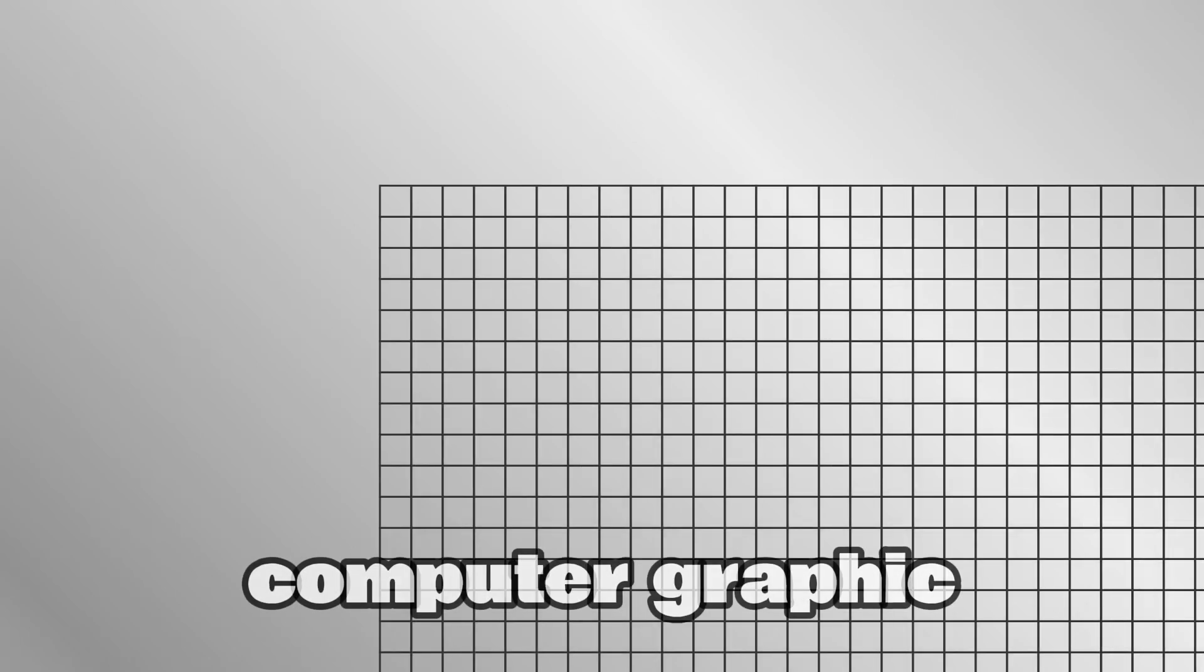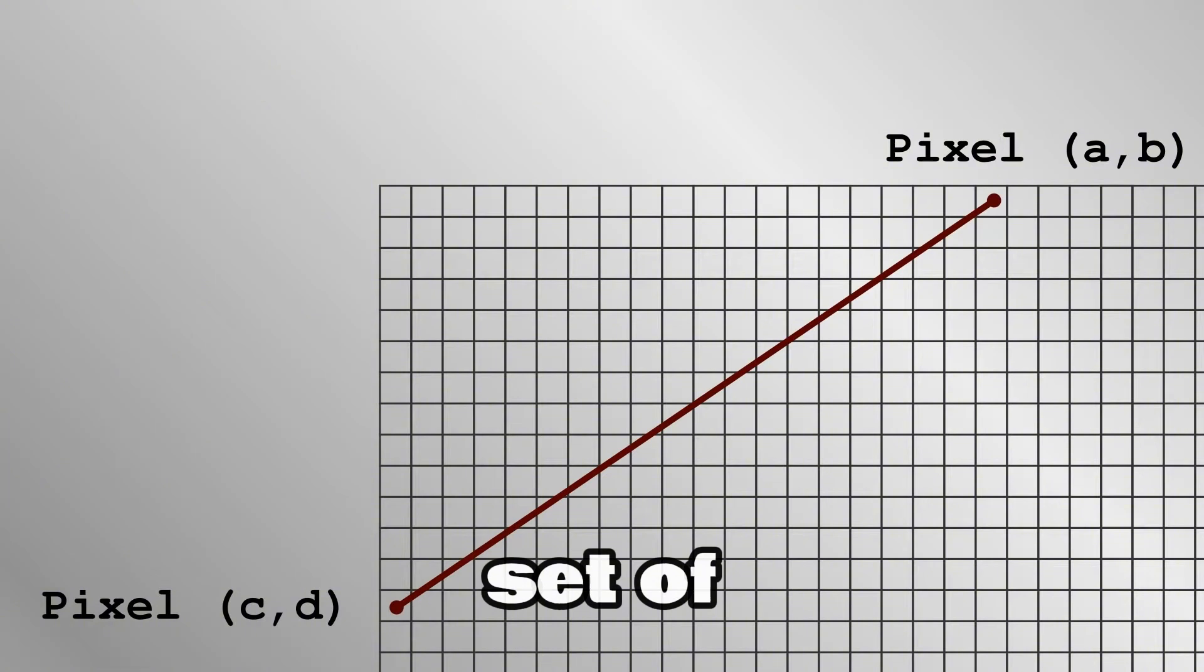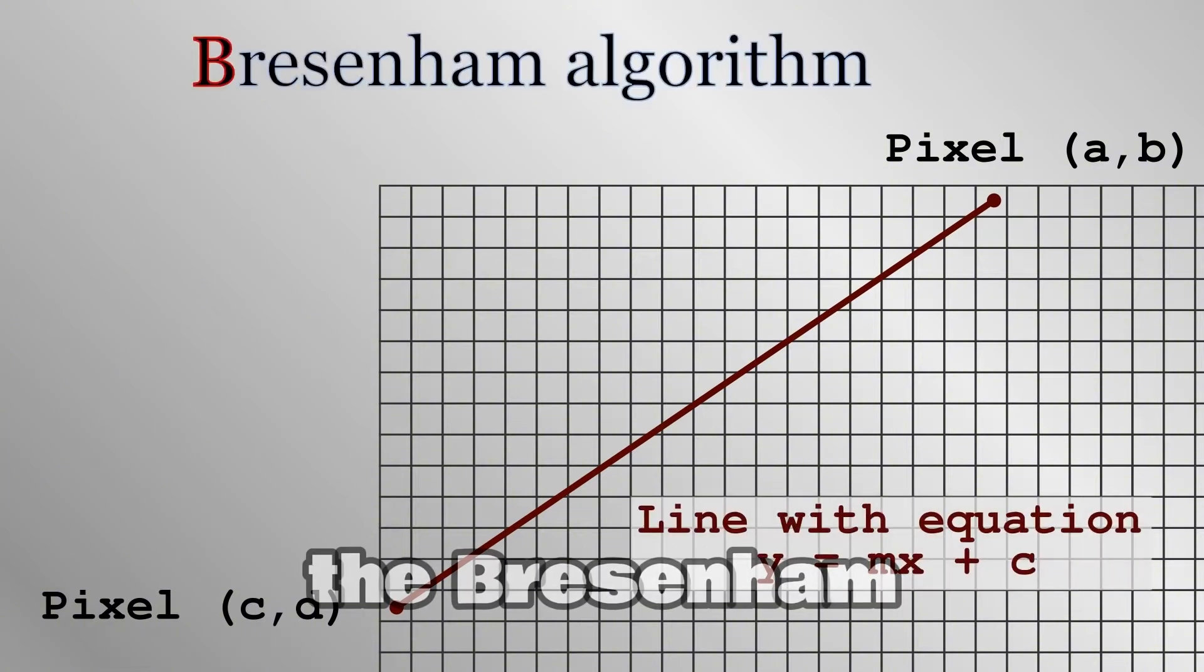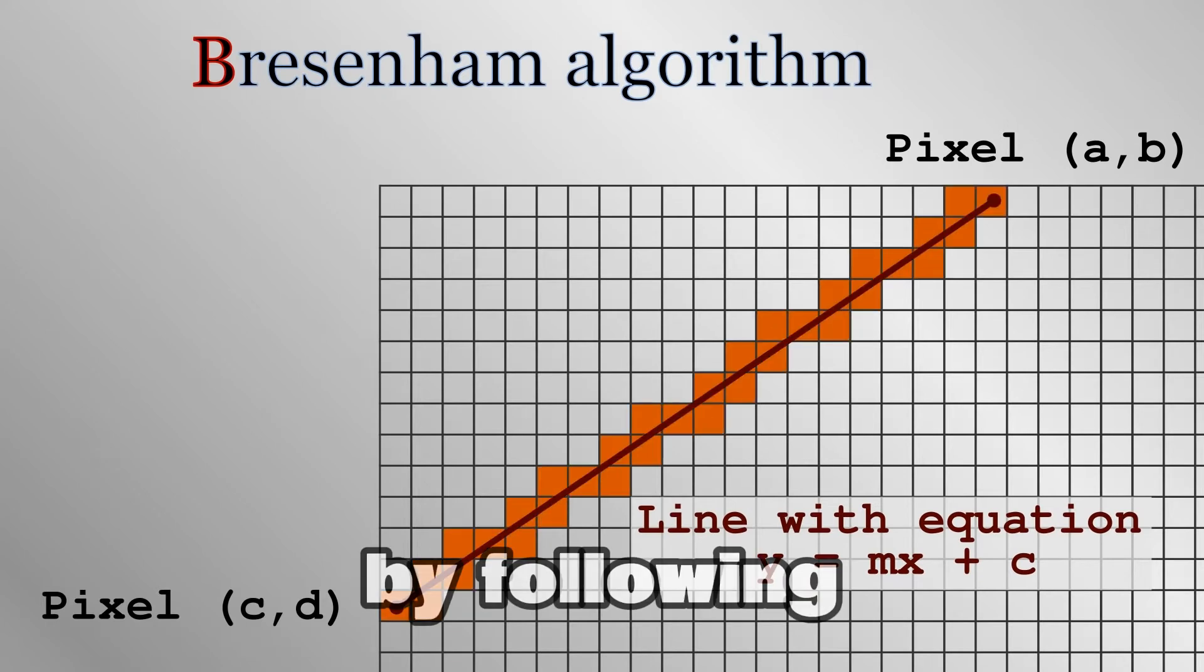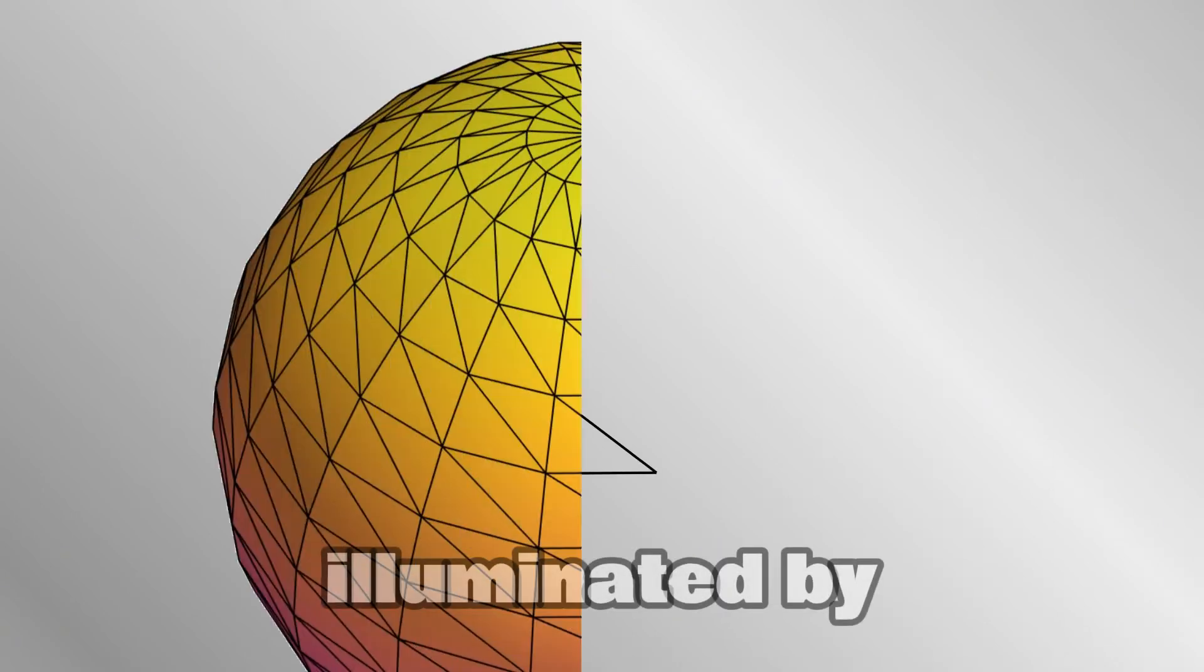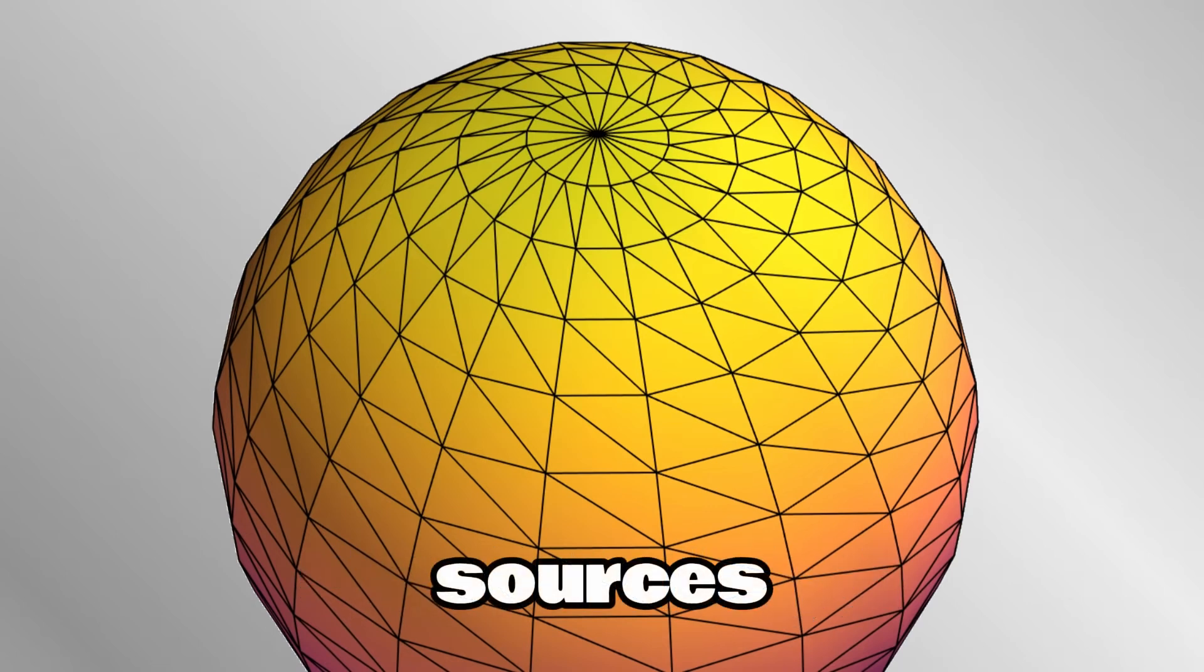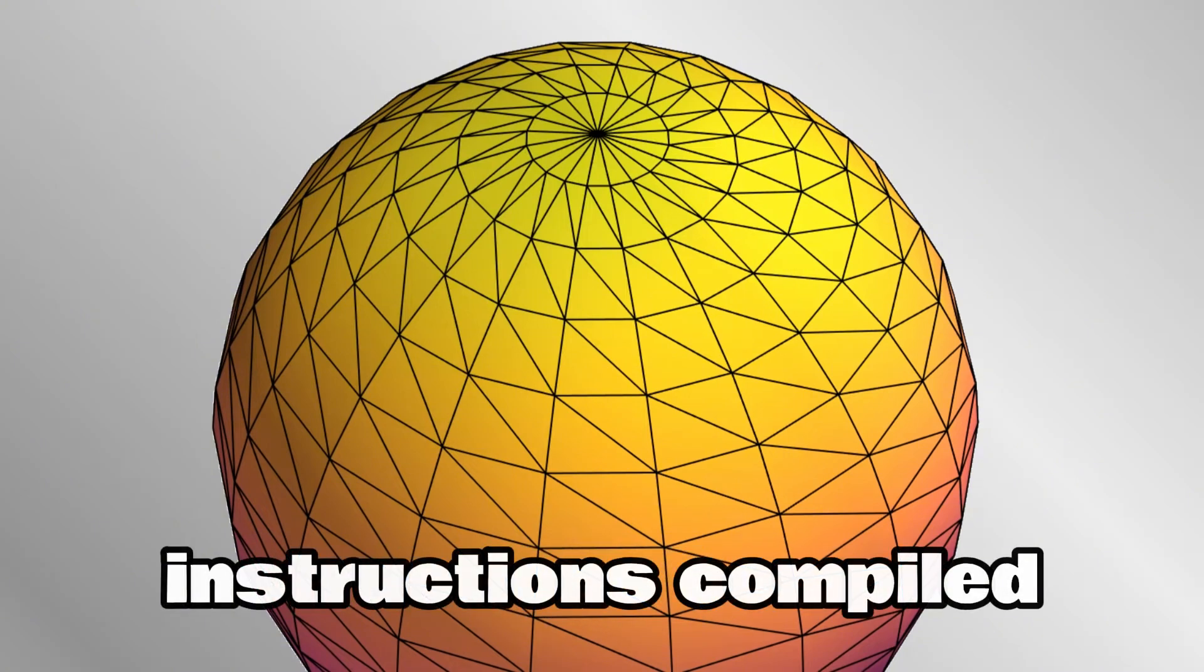The simplest computer graphic involves drawing a line between two points, both with their own set of coordinates x, y. The Bresenham algorithm involves a loop which draws just such a line by following a straight x, y curve, familiar from school mathematics. Draw three lines and you have a triangle which can be filled with textures, illuminated by simulated light sources and combined with thousands of others to make a 3D shape. No matter how complicated, it all comes down to addition, multiplication and jump instructions compiled into functions.